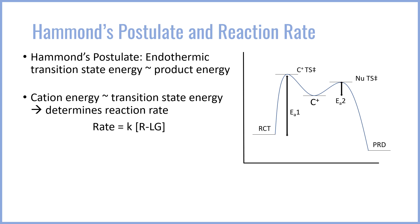Because this step is endothermic, the transition state energy is very similar to the cation energy, and so a higher cation energy means a larger transition state energy and therefore a slower reaction, whereas a more stable cation lowers the transition state energy and gives you a faster reaction.